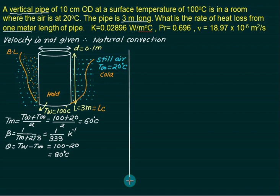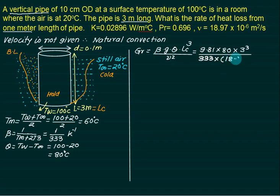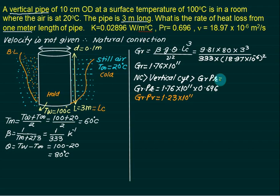Grashof number = β × g × θ × Lc³ / ν² = (9.81 × 80 × 3³) / (333 × (18.97×10⁻⁶)²) = 1.76 × 10¹¹. To select a correlation for a vertical cylinder, calculate GrPr: Gr = 1.76×10¹¹ and Pr = 0.696, so GrPr = 1.23 × 10¹¹. Since this is greater than 10⁹, the flow is turbulent.